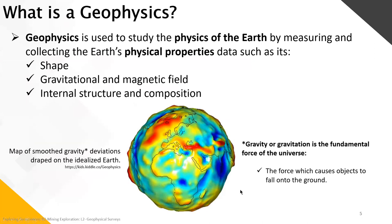Starting with a basic definition: what is geophysics? Geophysics is used mainly to study the physics of the Earth by measuring and collecting the Earth's physical properties — data such as its shape, its gravitational and magnetic field, and anything that has to do with internal structure and composition. Here is a simple smoothed image of the Earth's gravity draped on an idealized Earth, showing the distribution of gravitational force. Gravity is the force which causes objects to fall onto the ground.